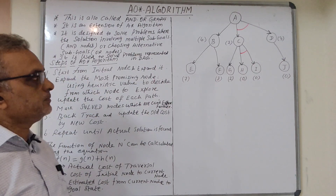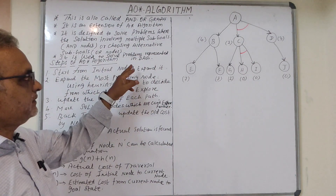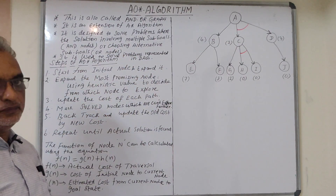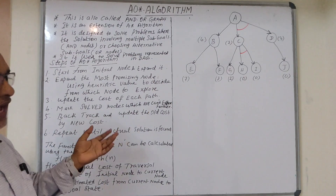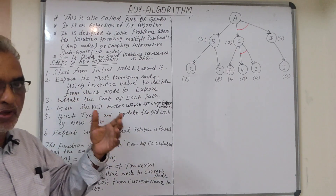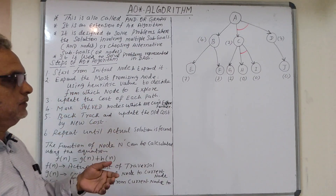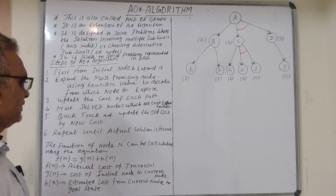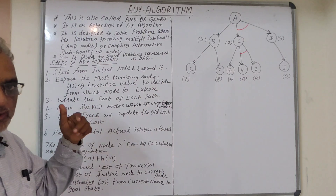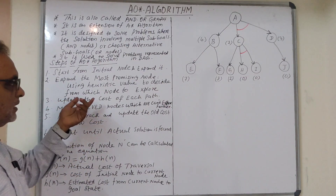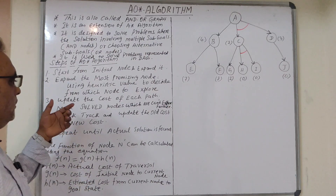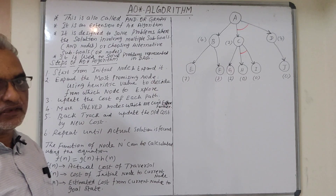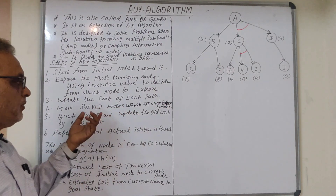It is used to solve problems represented in a directed acyclic graph. The steps of the AO* algorithm: we start from the initial node, expand the initial node, then after expansion select the most promising node using the heuristic value to decide which node to explore further. After that, calculate the new cost and update the cost of each path. Mark the solved nodes which cannot be further explored — those nodes will be marked as solved.